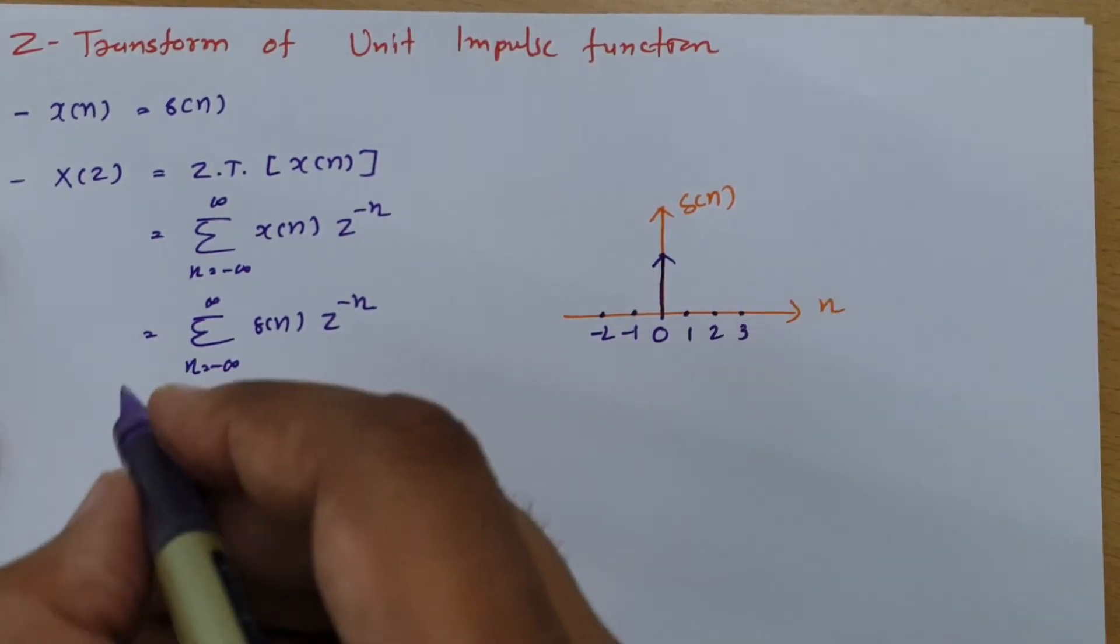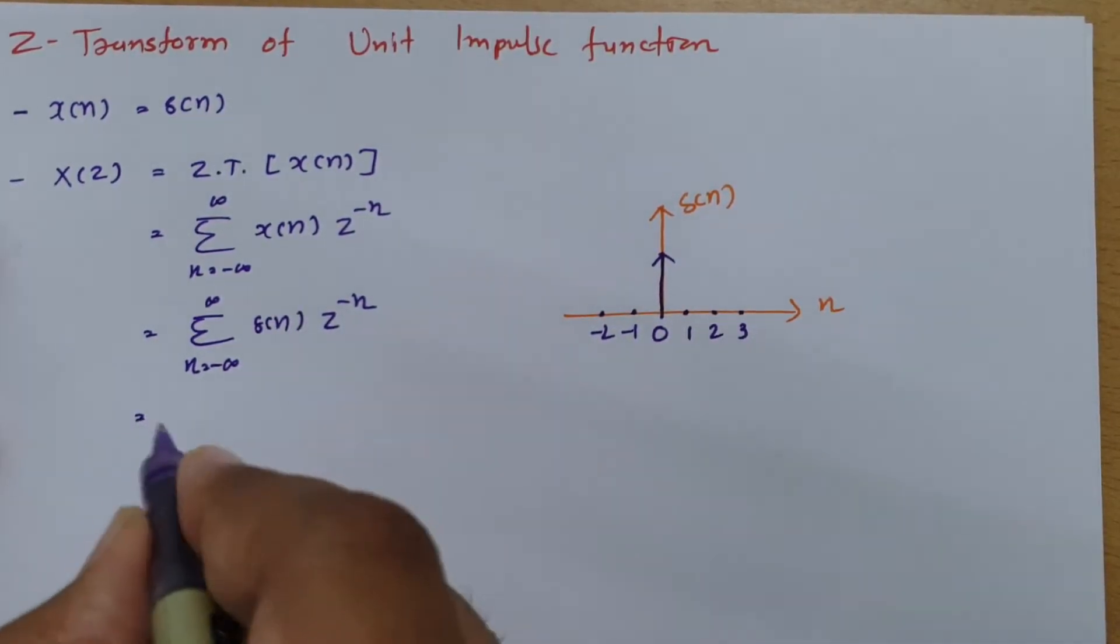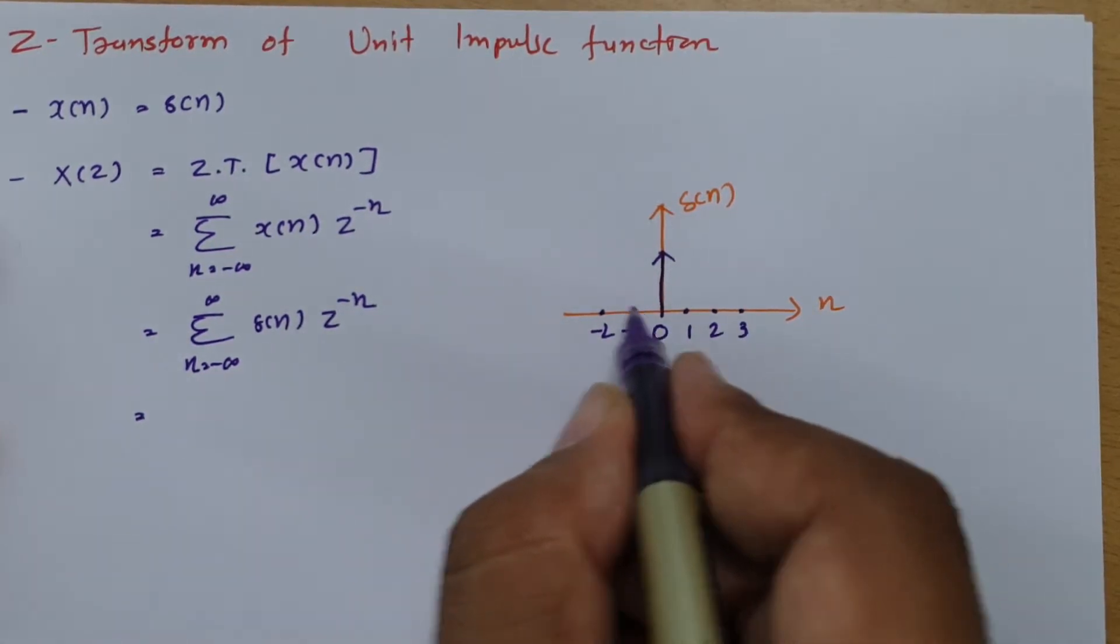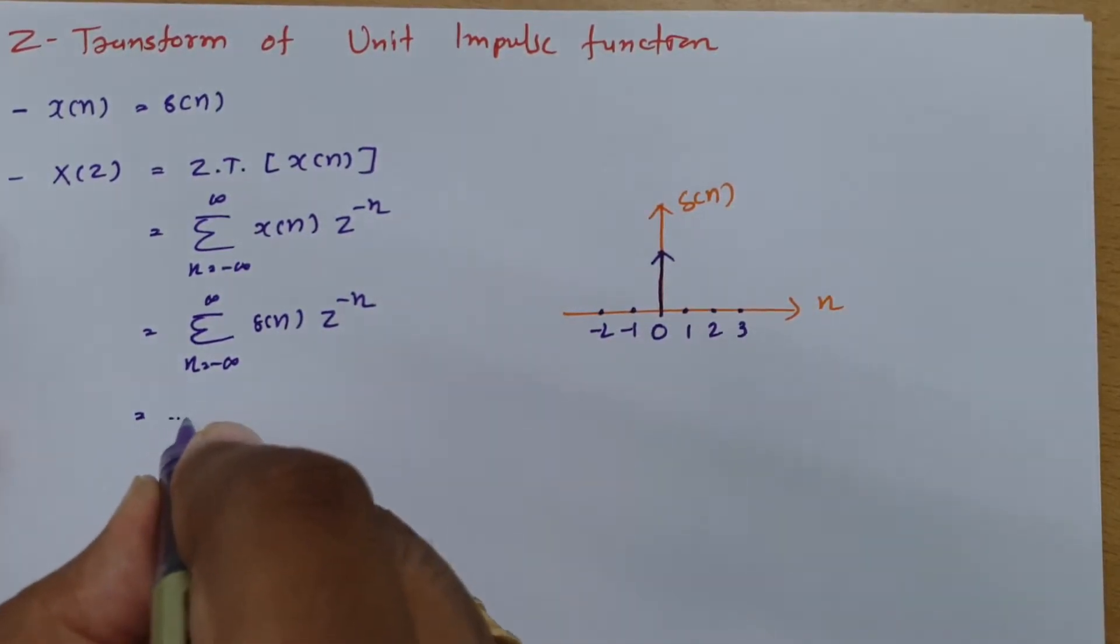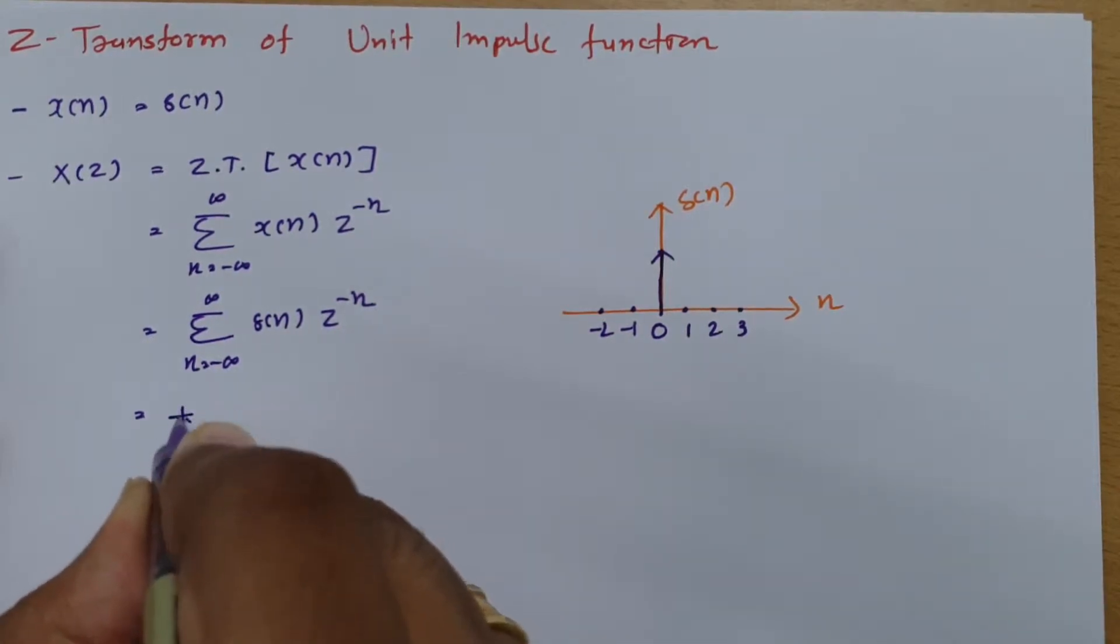So whenever you do this calculation, for the negative infinity terms, you will be finding that the summation is happening.